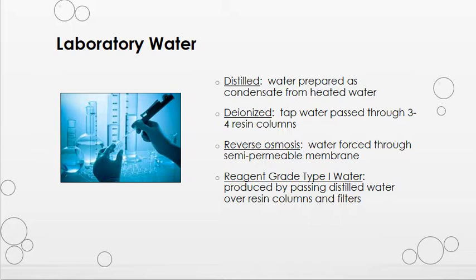In reverse osmosis, water is forced through a semi-permeable membrane, which removes most bacteria, particulate matter, and organic materials. However, small levels of contaminants may remain, so this type of water is not suitable for type 1 or type 2 water. Reagent grade type 1 water, which is the most pure, is produced by passing already distilled water over resin columns and then through filters. This type of water should be used to reconstitute controls and calibrators to prevent any contamination that could affect your lab results.